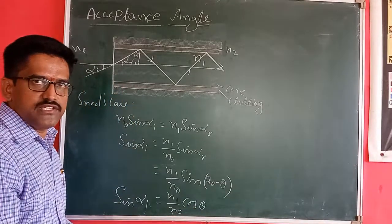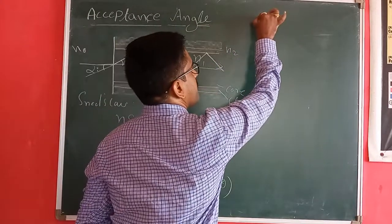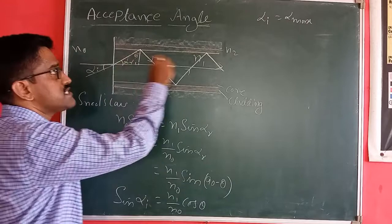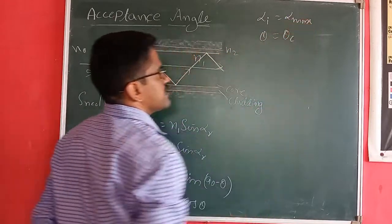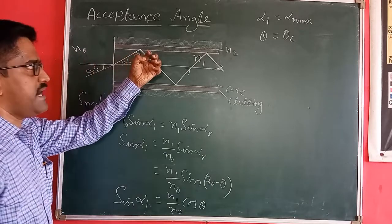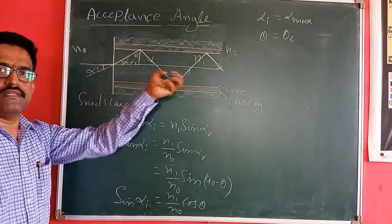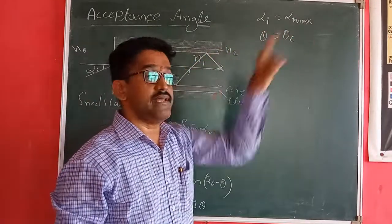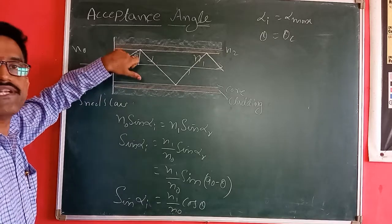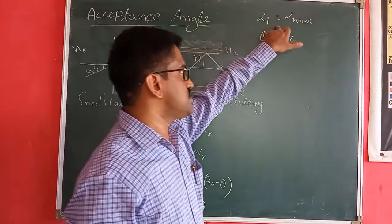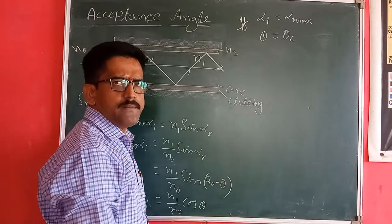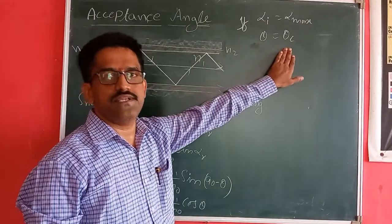One more condition: if the incident angle is maximum, alpha_i = alpha_maximum, then theta becomes theta_c, the critical angle. The alpha_maximum is the maximum incident angle which can be accepted by this optical fiber. That maximum incident angle is known as the accepting angle. If alpha_i equals alpha_maximum, then theta equals theta_c.